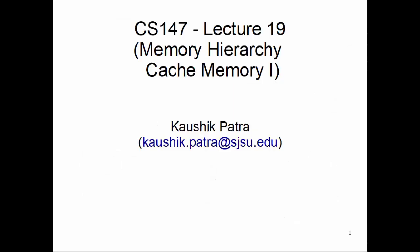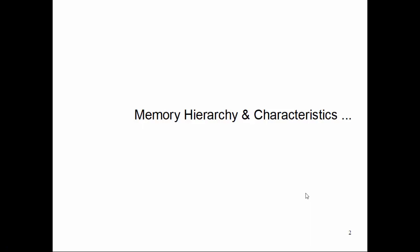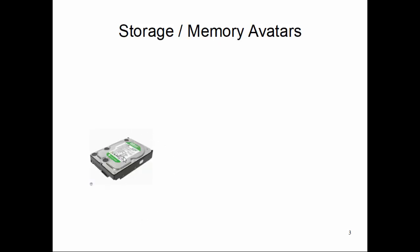With that perspective, let's first review different types of memories and their hierarchies and relative characteristics. There are many types of storage and memories available in many forms. Starting with this — if you don't recognize it, this is a hard disk that goes into your desktop or laptop, especially older laptops. Newer laptops have other technology, but this is a magnetic hard disk. In general, hard disk is one type of storage.